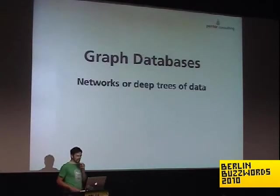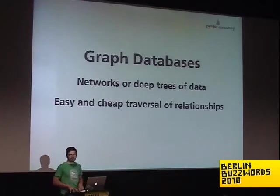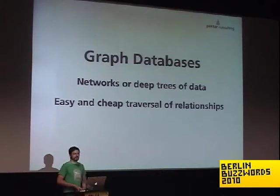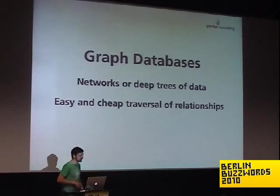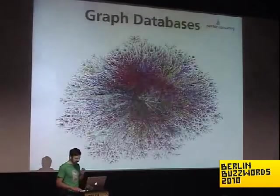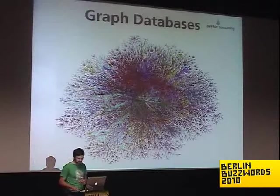The last contestant: graph databases. They allow you to store very large networks or trees of data, and traversing that graph is very cheap. There's going to be a Neo4j talk later today. The gist is that traversing the tree is cheap because the data is stored in a way that allows for it. It's very easy to dump whole trees or graphs of objects into a graph database and let it take care of storing all your associations — you don't have to do any nested queries. You can walk from association to association or do fancy queries. This is what it could look like — this is the internet somewhere around 2000.